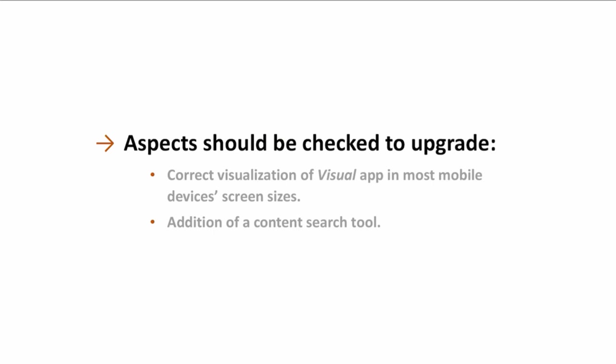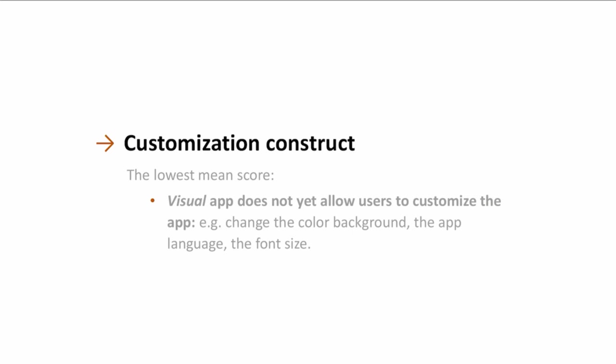The customization construct has the lowest mean score because the Visual app does not yet allow users to customize the app — for example, change the color background, choose the app language, or change the font size.